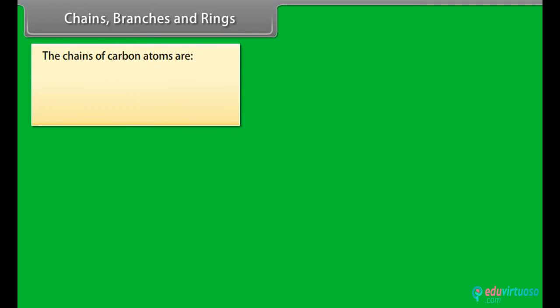Chains, branches, and rings. Many compounds contain carbon atoms that are linked with each other. The chains of carbon atoms are linear chains, branched chains, and cyclic rings.